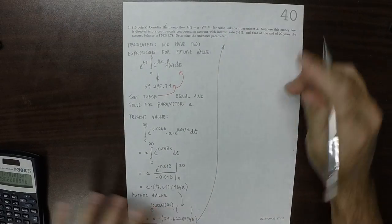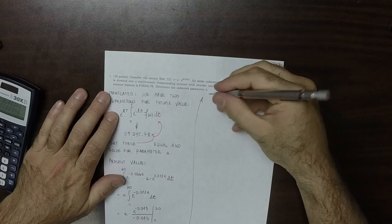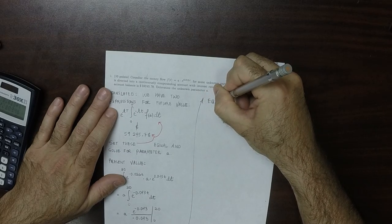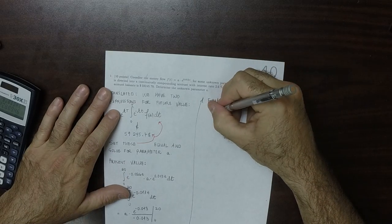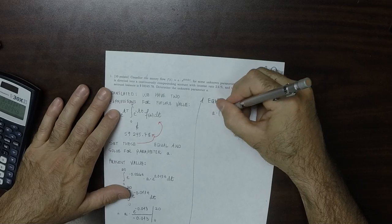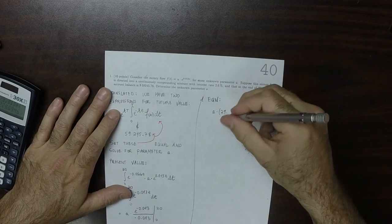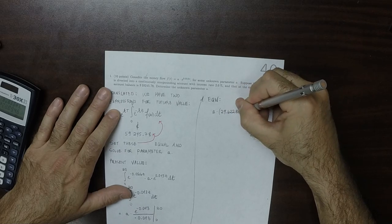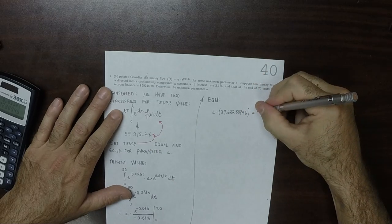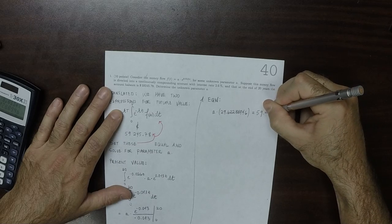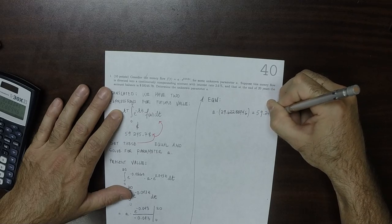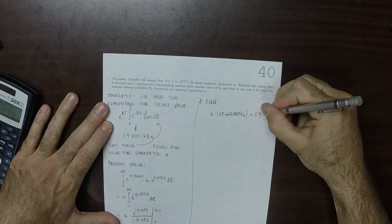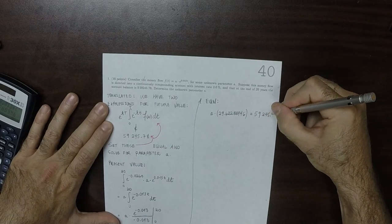Okay, so that's the future value. And as a result, so now we have our equation. We have that A multiplied by 29.62288946 is equal to 59,245.78.